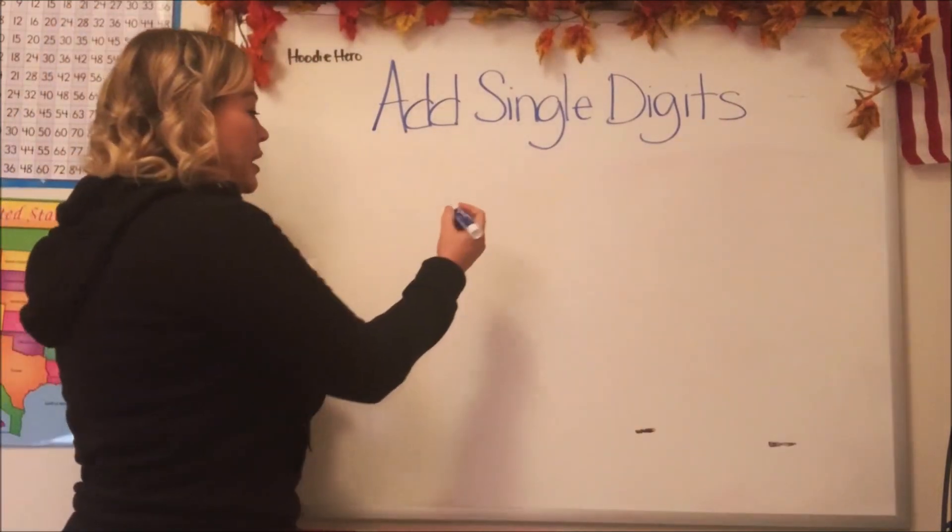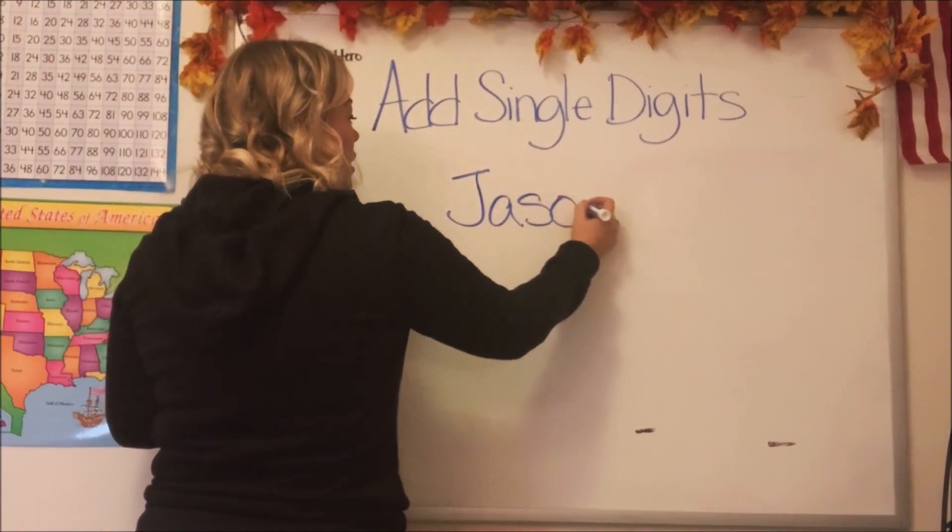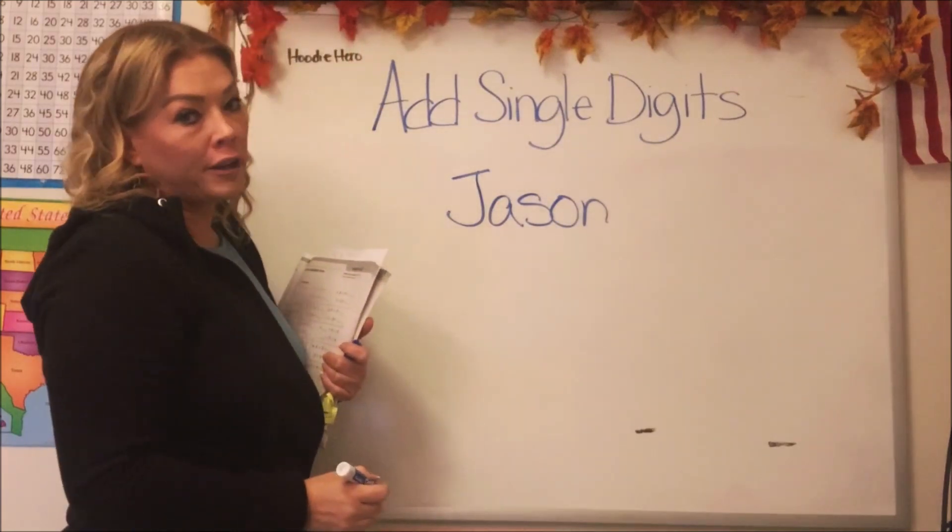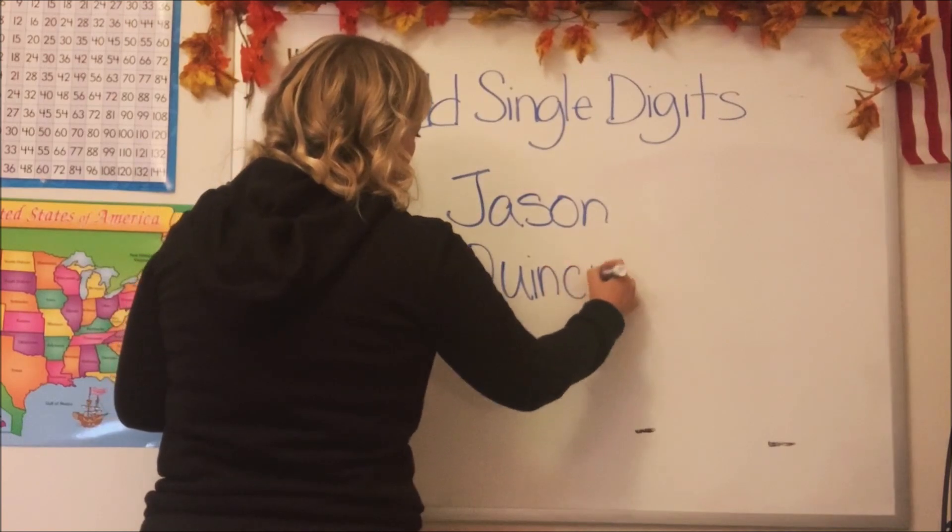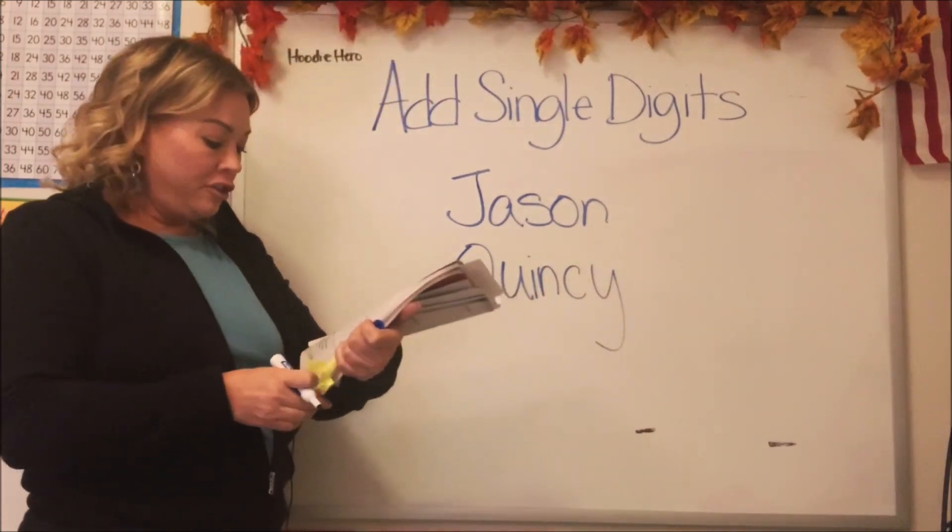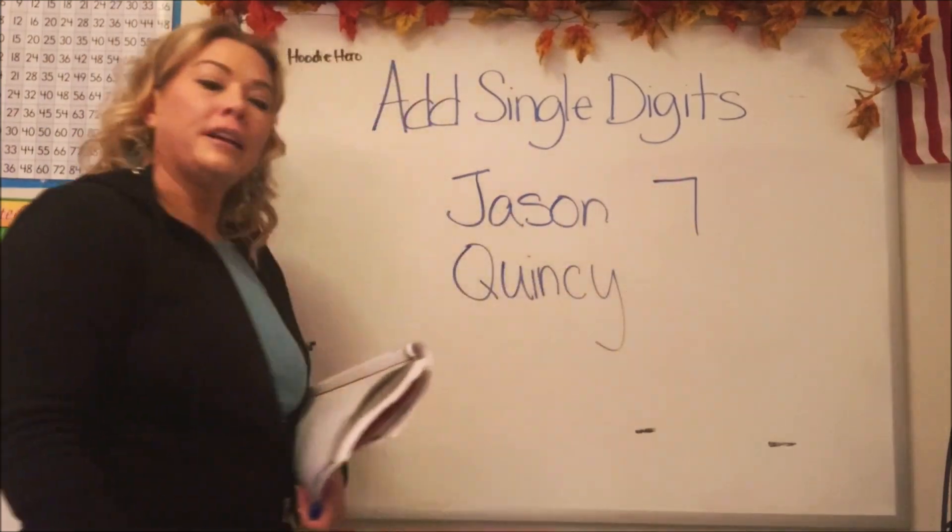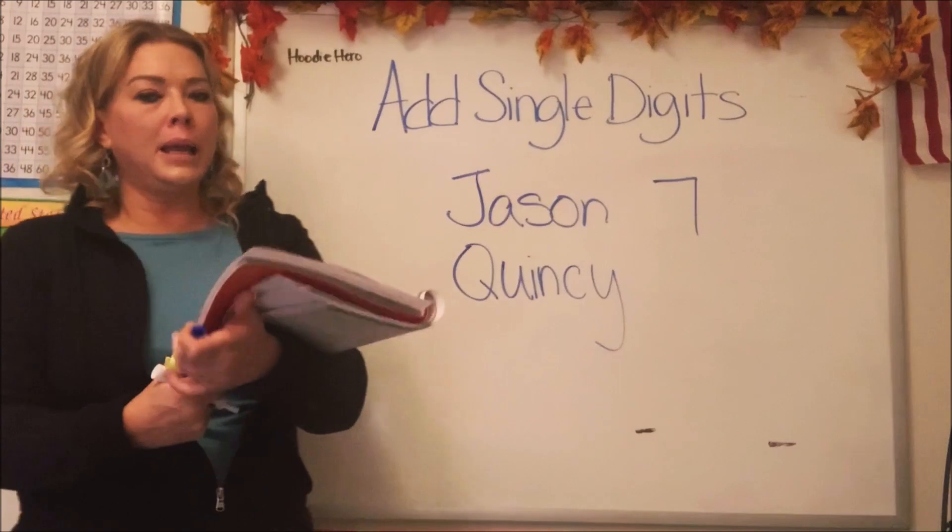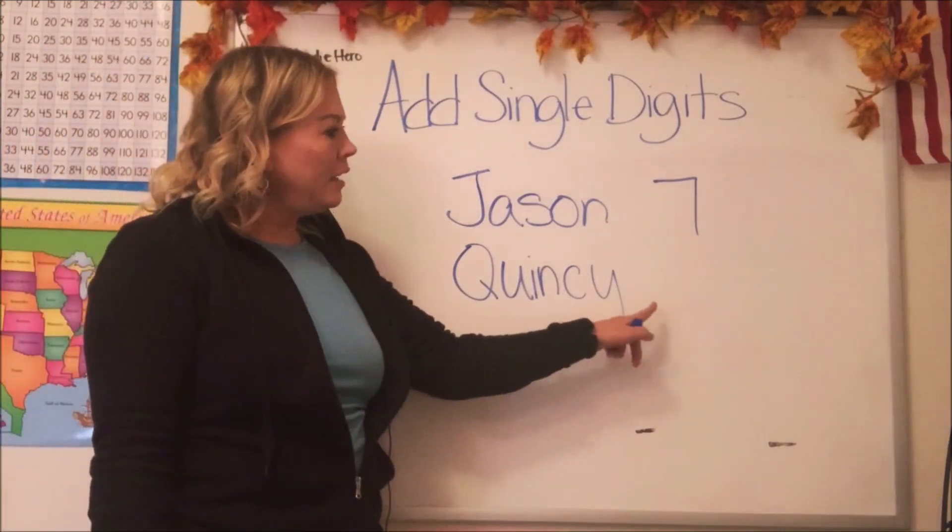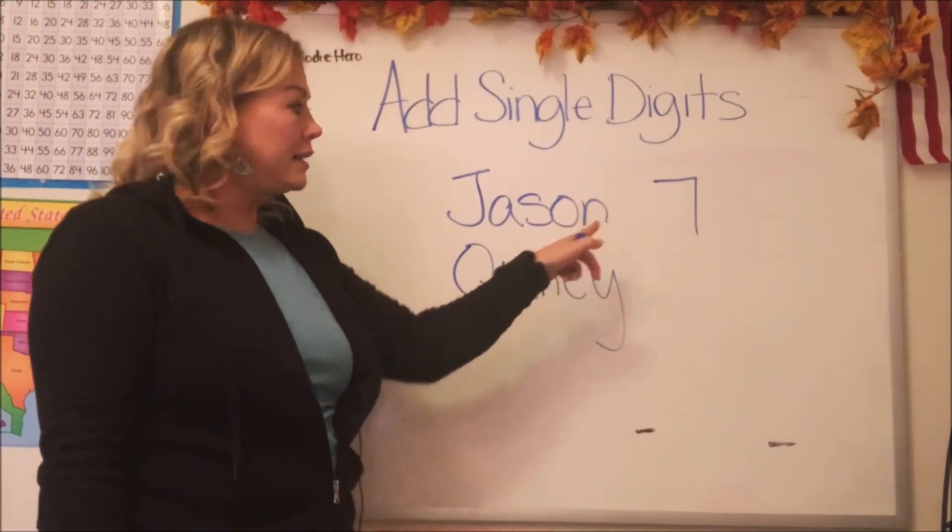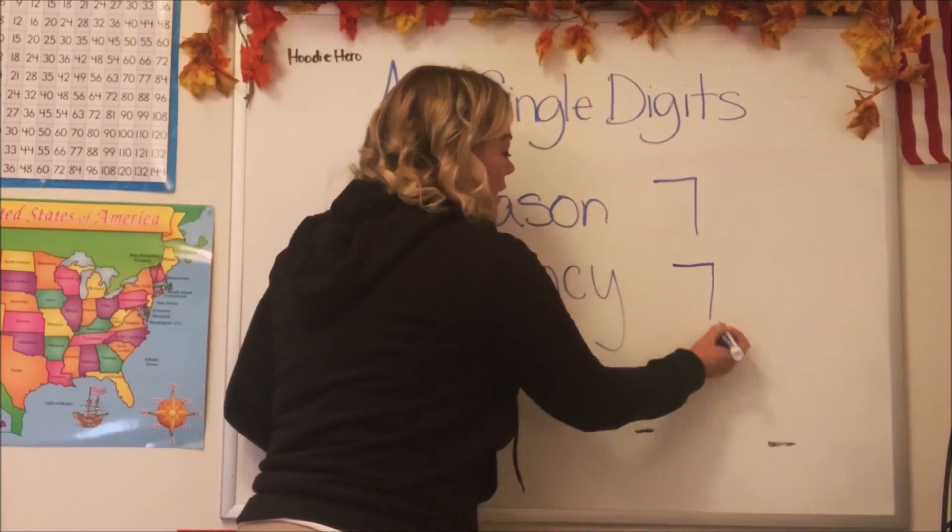All right, so let's write down the key things from this word problem that we're going to want to remember. So there were two people, weren't there? There was Jason, and there was Quincy. Now it said Jason had seven puzzles. Let's write the seven right there. Now it says Quincy has the same number of puzzles. What does that mean, same number? Quincy has the same as Jason? She does. And how many did Jason have? Seven. Good job. So Quincy also has seven.